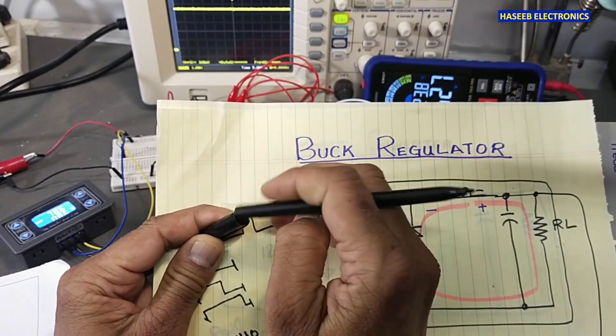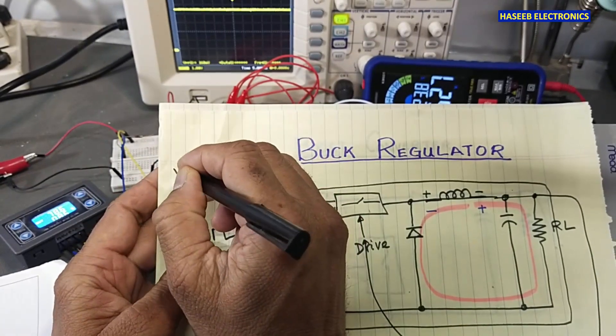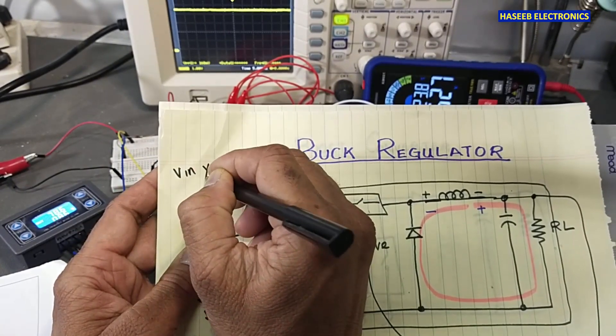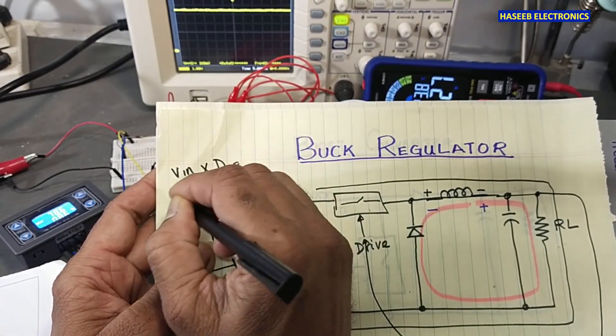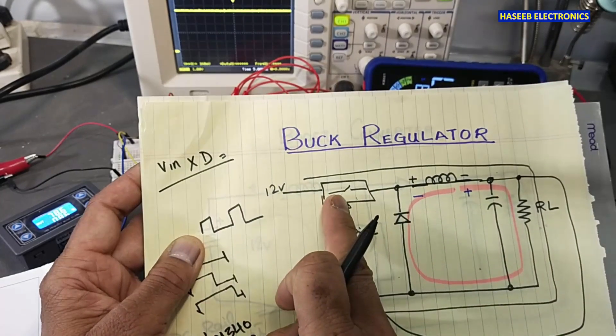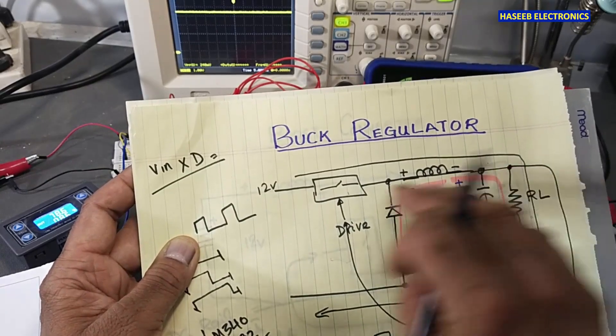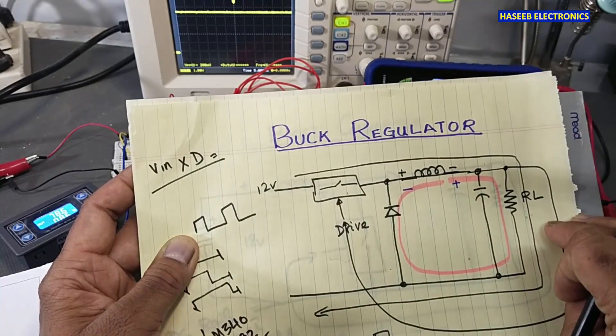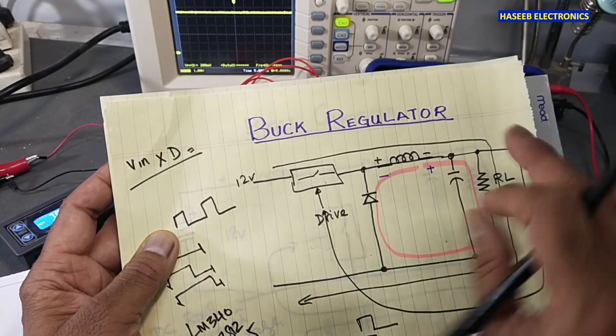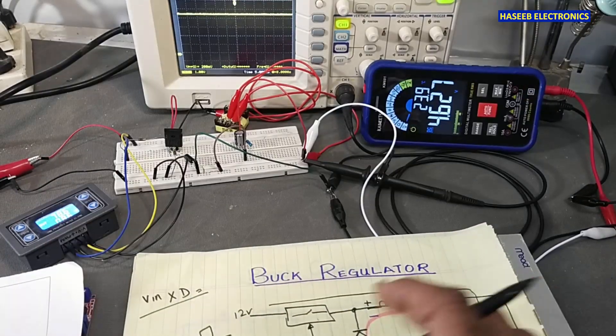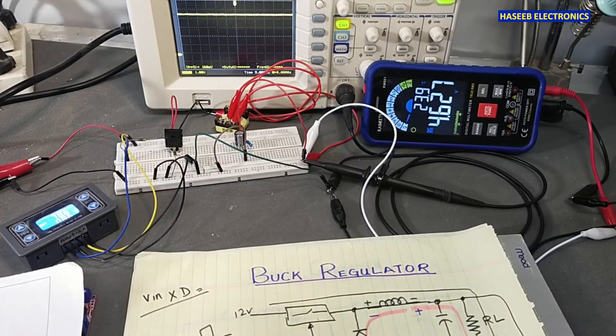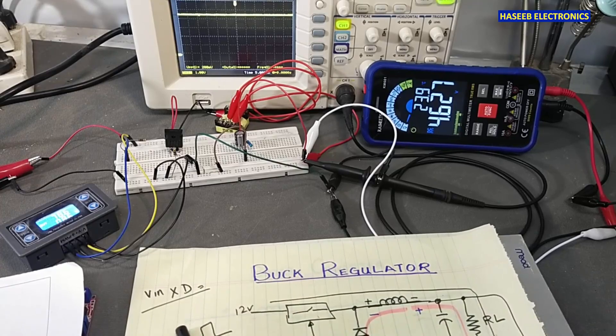This series inductor is dropping the voltage. The output voltage in this buck regulator is V in multiplied by duty cycle. How much percent we will allow to pass through this inductor, and our low pass filter will attenuate that voltage and we will receive in the output. If you have any question please write in the comments. Thanks for watching, Assalamualaikum warahmatullahi wabarakatuh.